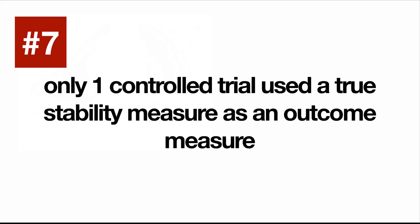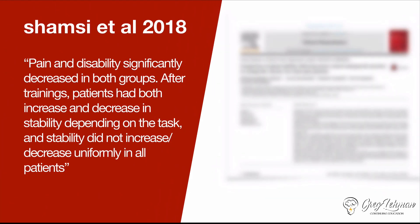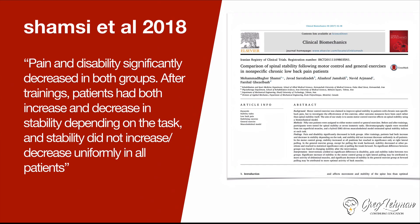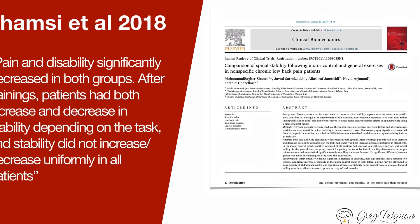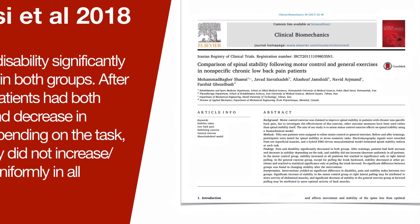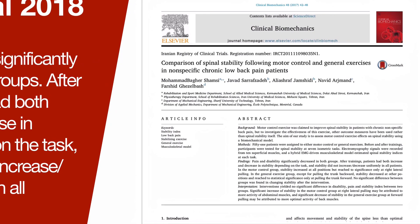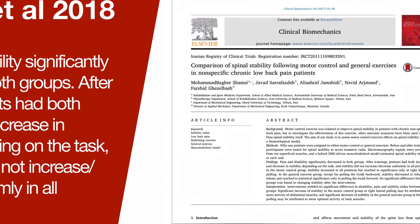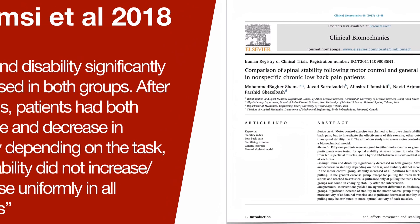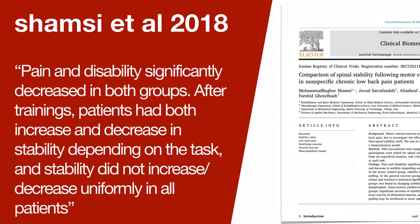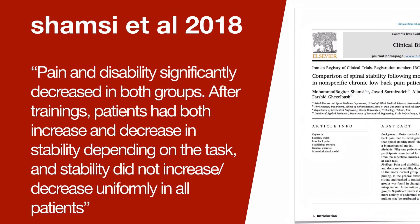Number seven: only one controlled trial has ever used a true stability measure as an outcome measure. That is unbelievable — only one paper has actually measured stability and followed people to see what happened as they got better. What they found was that these measures of stability or instability do not correlate with other measures of clinical success. Some measures of stability increased, some decreased. So how relevant is this concept of instability for low back pain?